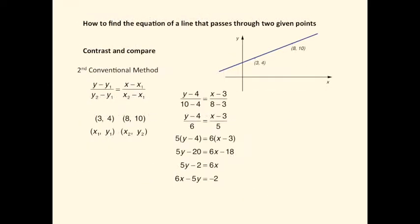The second conventional method uses this formula: (y minus y1) over (y2 minus y1) equals (x minus x1) over (x2 minus x1). It's quite difficult to remember, but it is helped by the fact that these two sides are symmetrical. These two sides reflect one another.